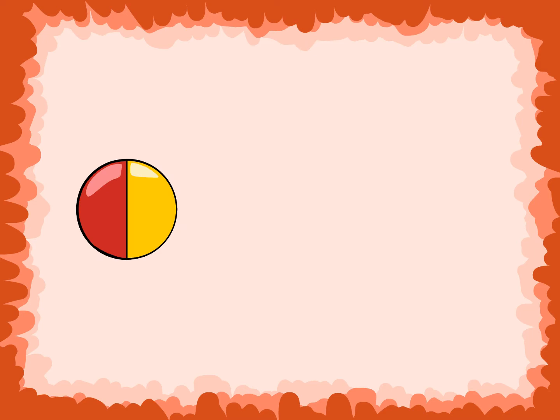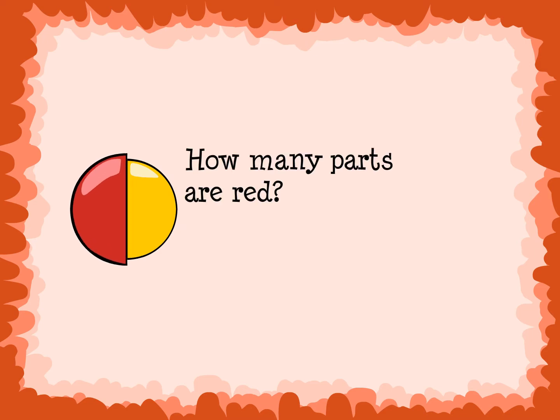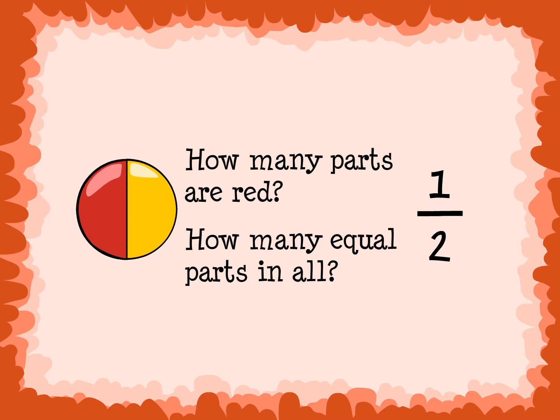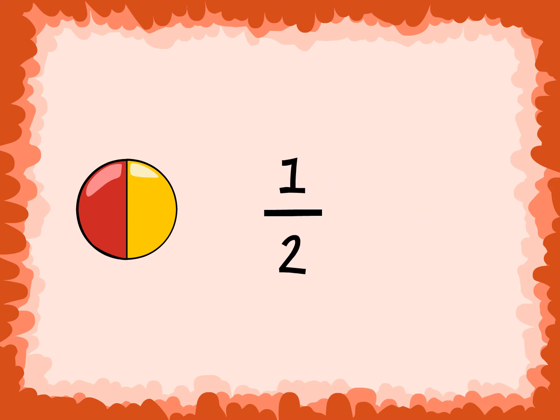Take for example this circle. How many parts of the circle are red? 1 — which is the numerator. How many equal parts are there in all? 2 — which is the denominator. What is the fraction for the red part of the circle? 1 over 2, or 1 half.